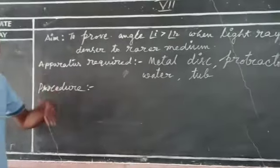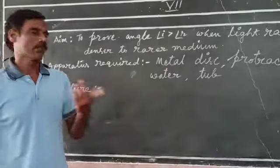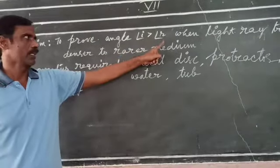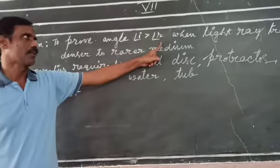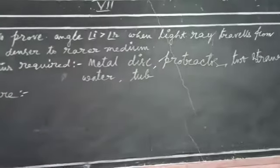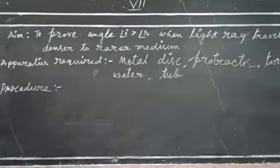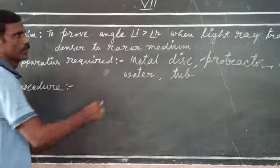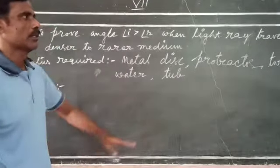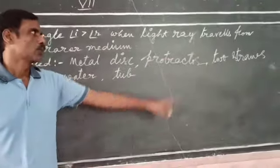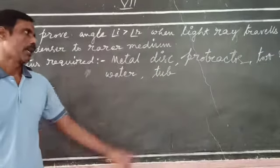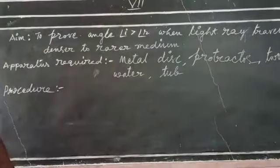Now we are going to discuss one more activity to show that angle I is greater than angle r, when light travels from a denser medium to a rarer medium. For this, we need the following apparatus: a metal disc, a protractor, two straws, water, and a tub.